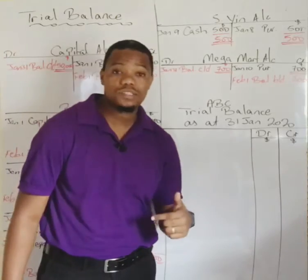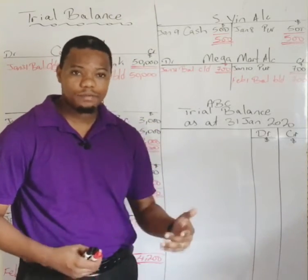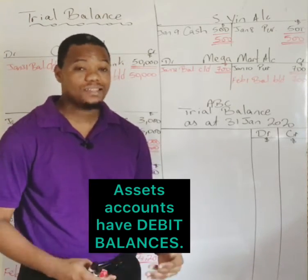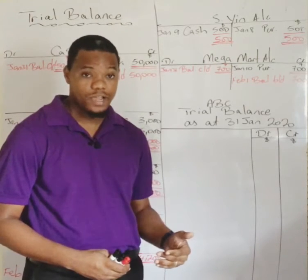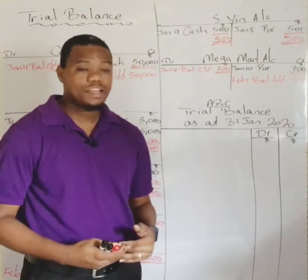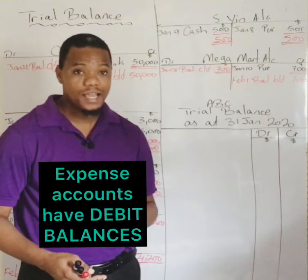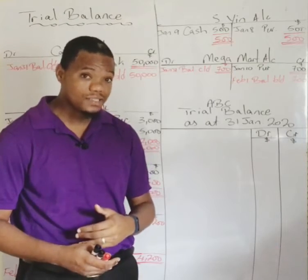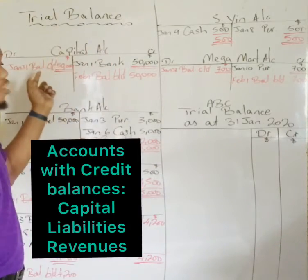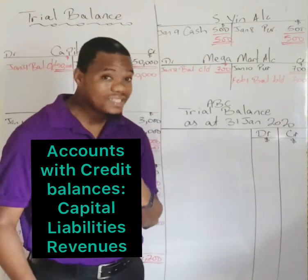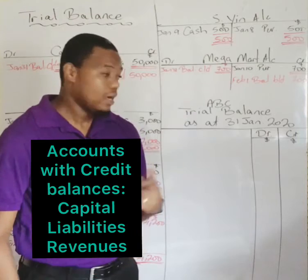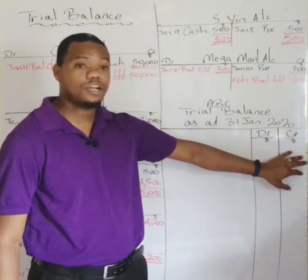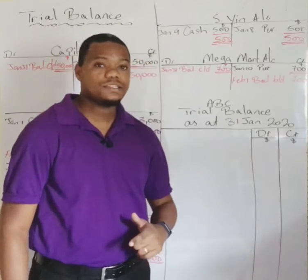Some accounts normally carry a debit balance and others a credit balance. For example, asset accounts and expense accounts normally have debit balances. Accounts that normally have credit balances include the capital account and liability accounts, meaning their balance brought down sits on the credit side, so they appear in the credit column of the trial balance.